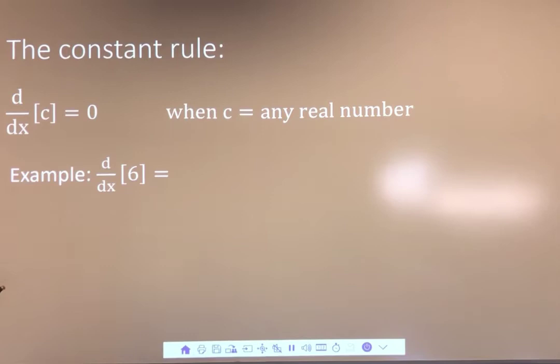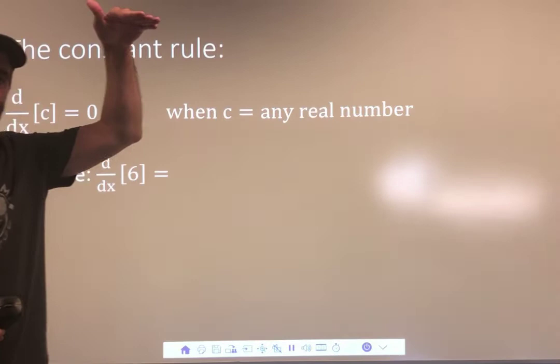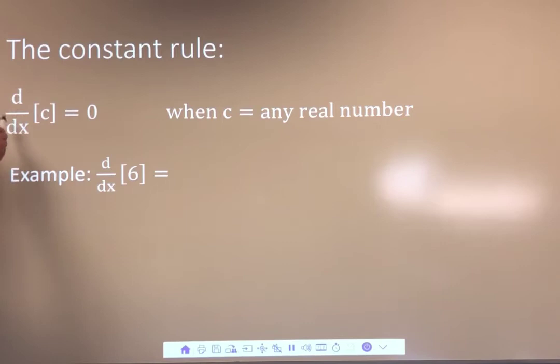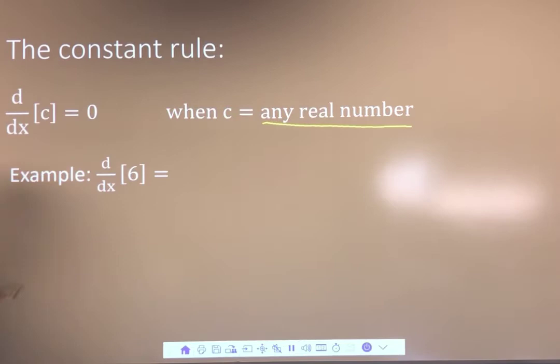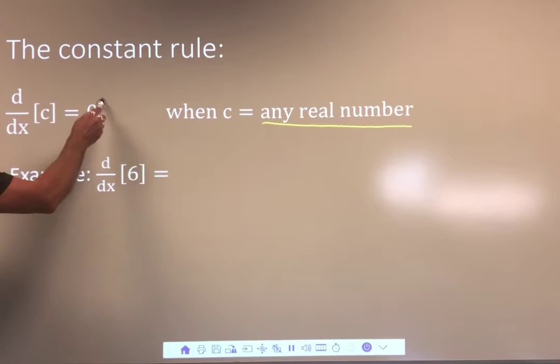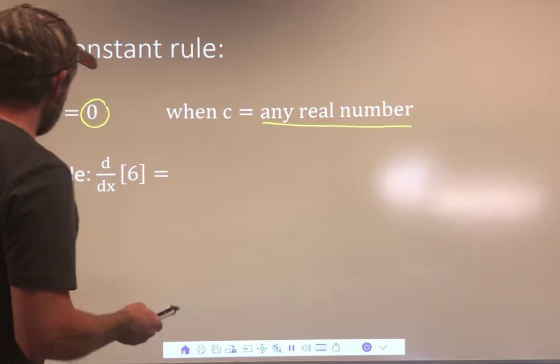Here is the constant rule. There's some different symbolic notation here. This is basically saying I am taking the derivative in terms of x — so d/dx means taking the derivative on top, in terms of x on the bottom. This says I'm taking the derivative in terms of x of a constant, or any real number. So it's just the derivative of a number. For example, I'm taking the derivative in terms of x of 6, and the rule says it's just going to equal 0.